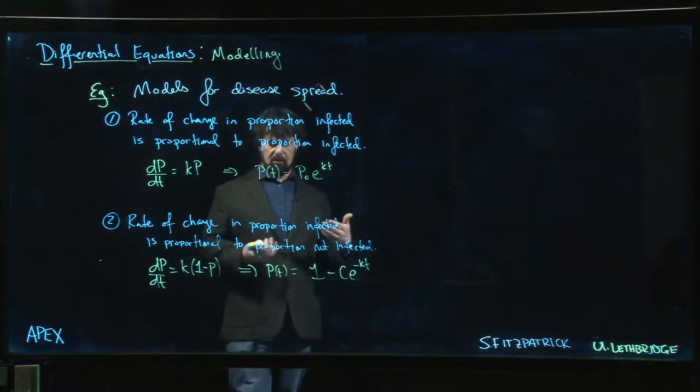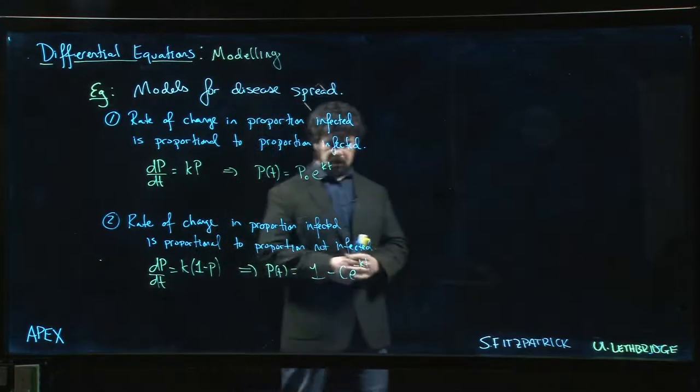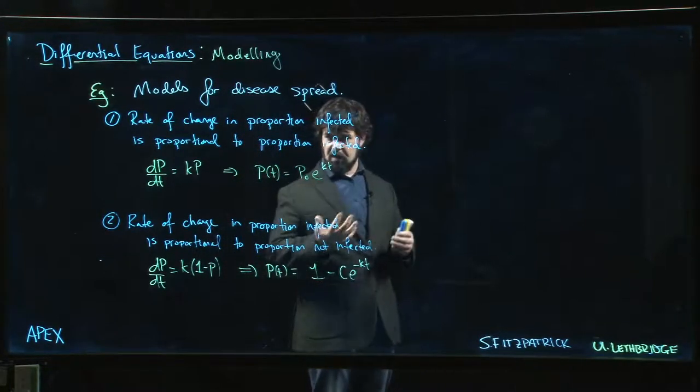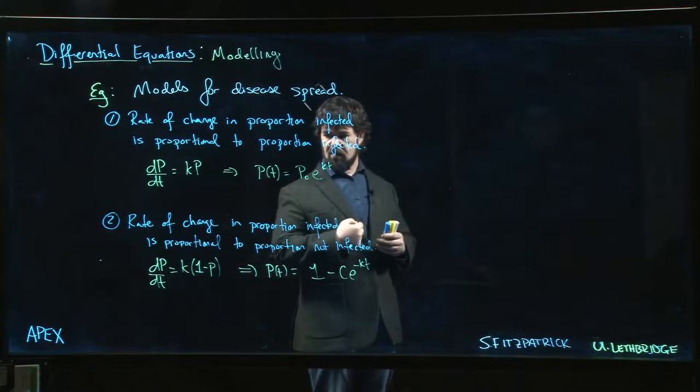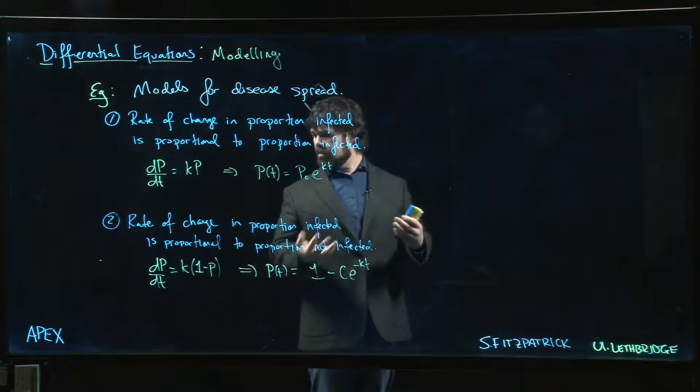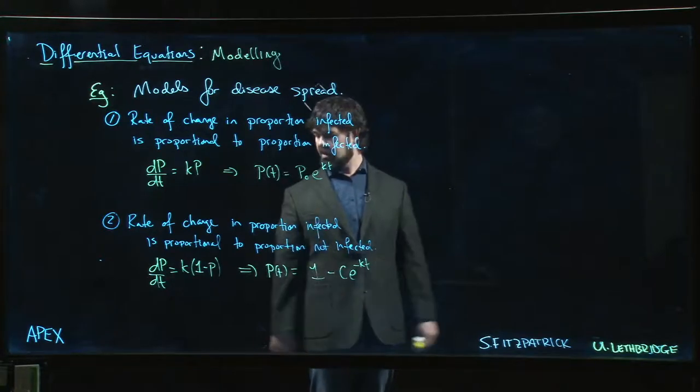Best case scenario probably takes into account both of them. Does this one work well for initial behavior? Maybe not. Maybe this one is better for sort of small values of t, maybe this is better for large values of t. Maybe neither one of them is really all that great and we should look for a third model.